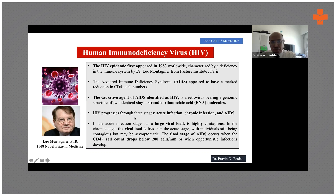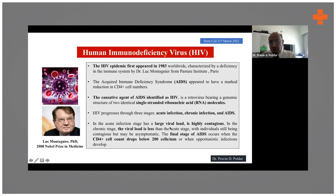HIV progresses through three stages: acute infection, chronic infection, and then AIDS. In the acute infection stage, you can evaluate the stage by counting CD4 cells and measuring viral load. The acute infection stage has a large viral load and is highly contagious, making it very dangerous.